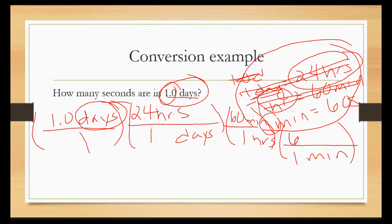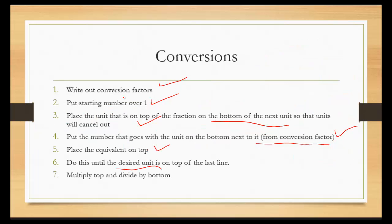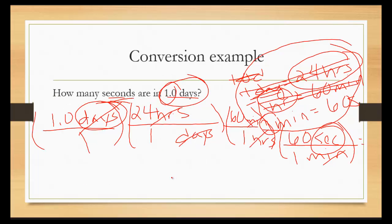So the days cancel, the hours cancel, and the minutes cancel. We're left over to seconds. So what we're looking for is on the top of the last line. Multiply the top and divide by the bottom. So 1.0 times 24 divided by 1 times 60 divided by 1 times 60 divided by 1 comes to be 86,400.